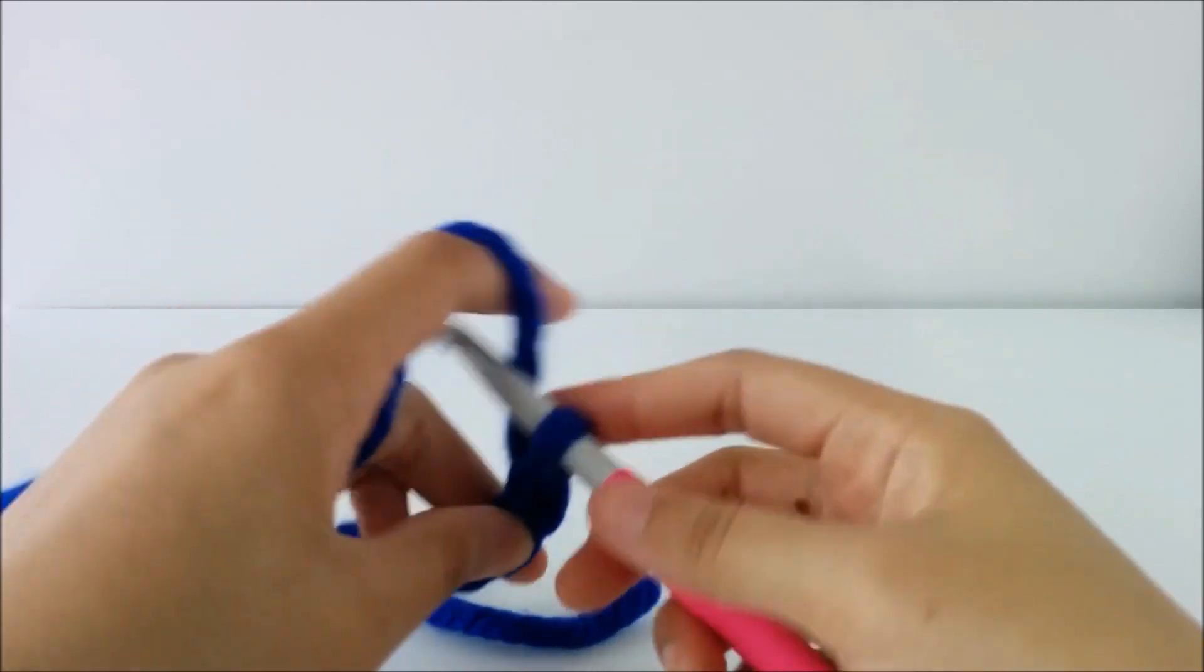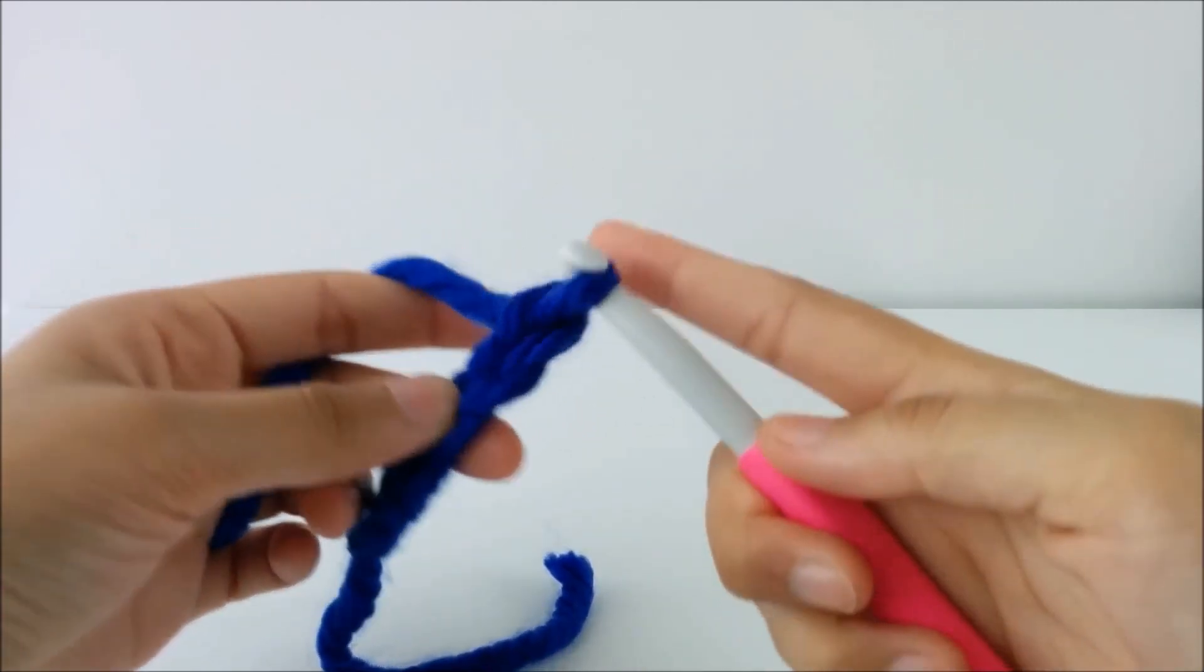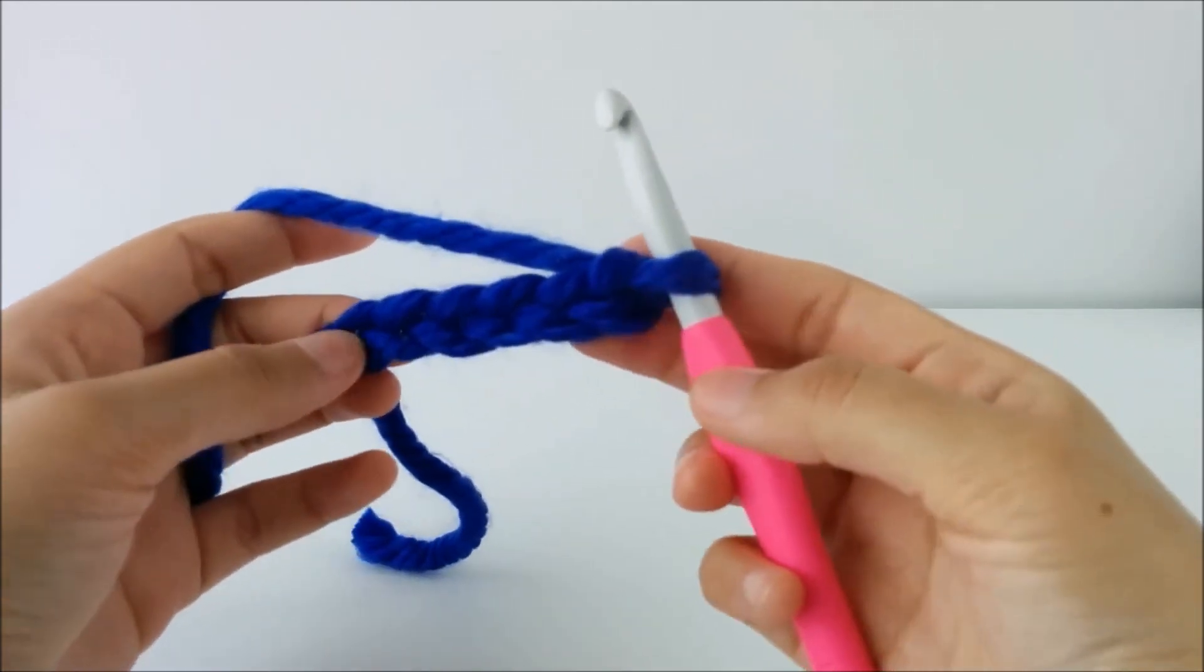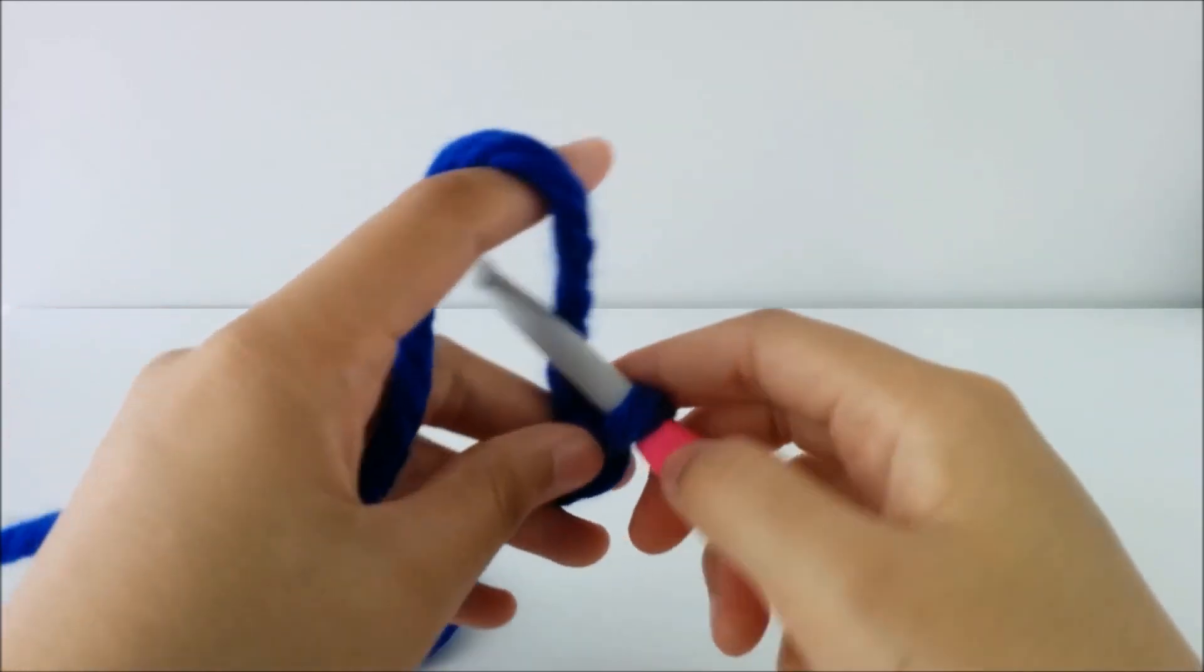When you're just starting out, this chain might be a little bit uneven. You might have some places that are really really tight together and some places are really large loose loops.